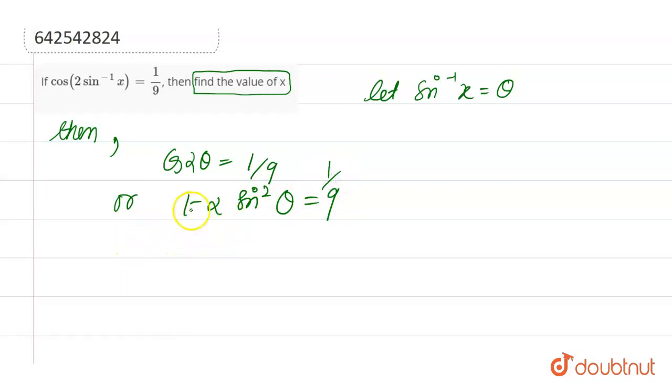So, just substituting the value to this side, we get x square is equal to 4 by 9.